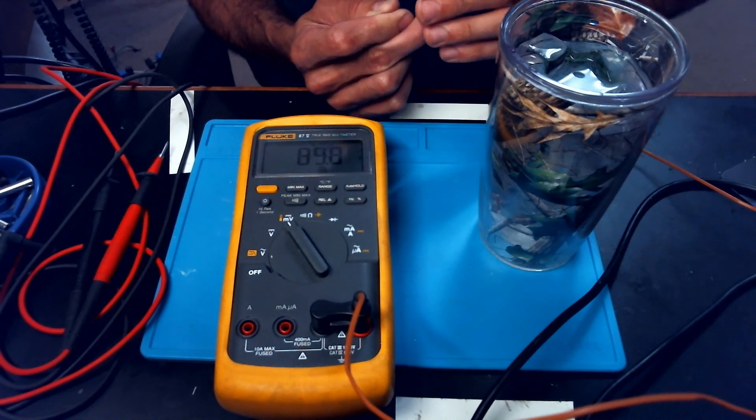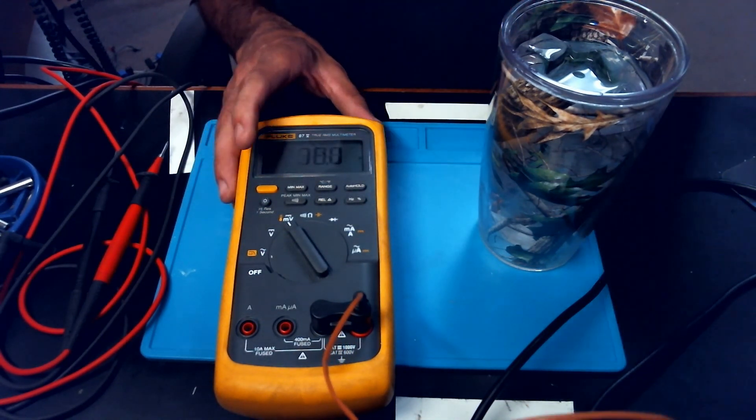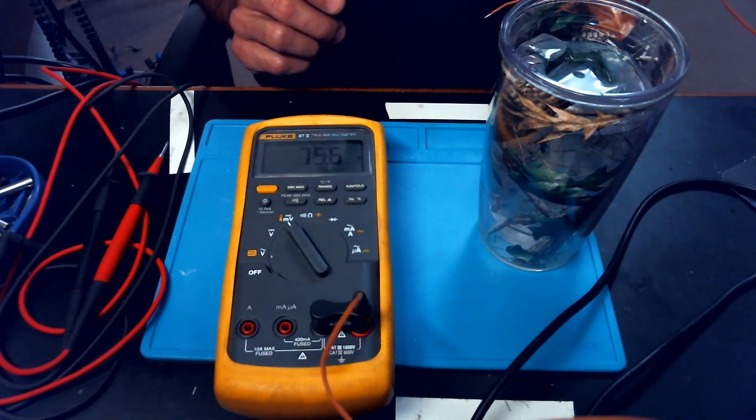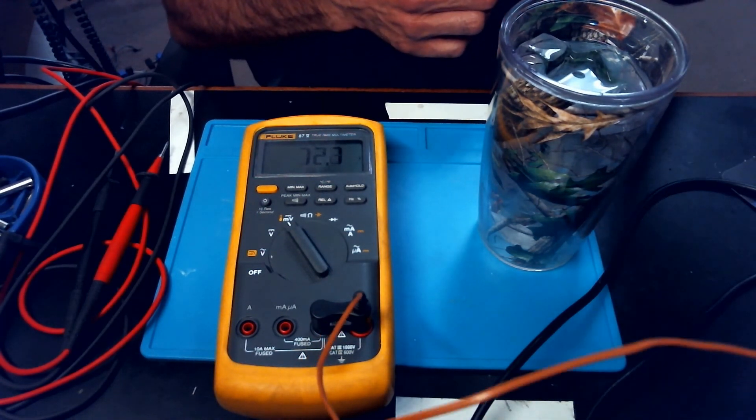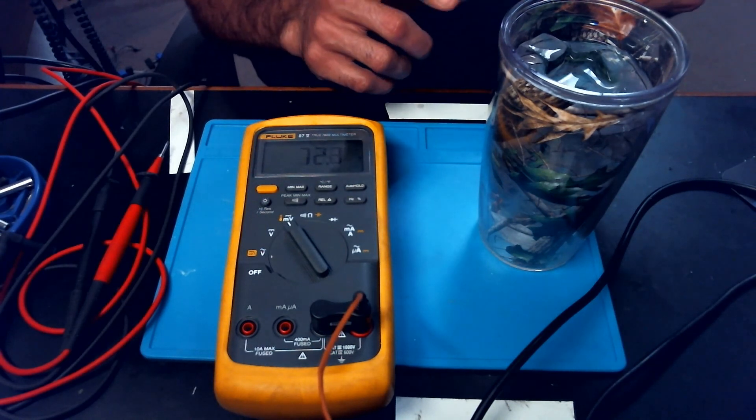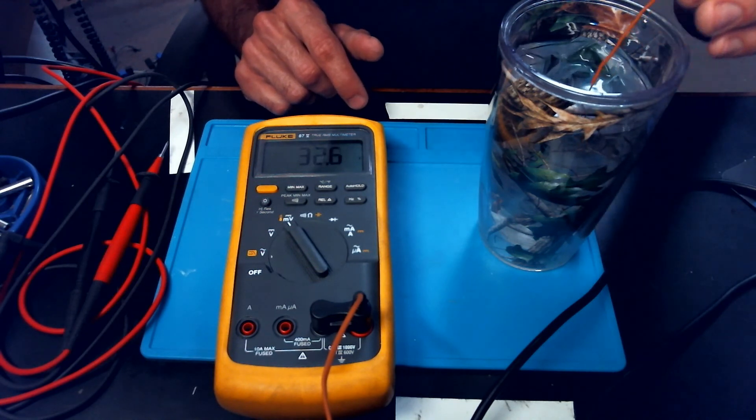You always want a good thermocouple whenever you're doing temperature on meters. The cheap ones, they don't respond very well, they have all kind of little issues, but Fluke's thermocouple is really, really good. You can see how quick it responds.